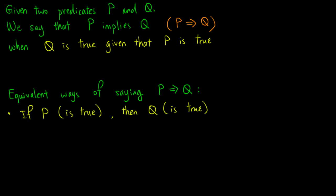Firstly, we have: 'if p is true, then q is true,' or simply 'if p, then q.' From now on, let me drop the phrase 'is true' and just write p to mean p is true. Next, we have 'q if p,' and 'p only if q.' Do not confuse these two sayings. The addition of the word 'only' swaps the positions of p and q.